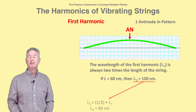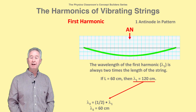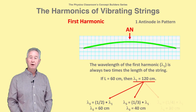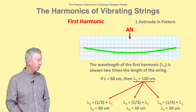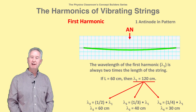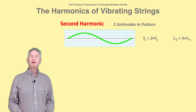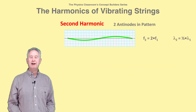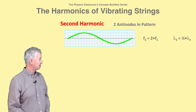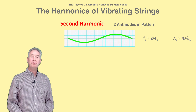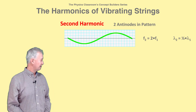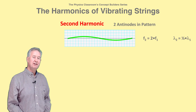The wavelengths of the other harmonics are fractions of this wavelength — like one-half, one-third, one-fourth the wavelength of the first harmonic. Compared to the first harmonic, the second harmonic has twice the frequency and one-half the wavelength and two antinodes. It looks like this.